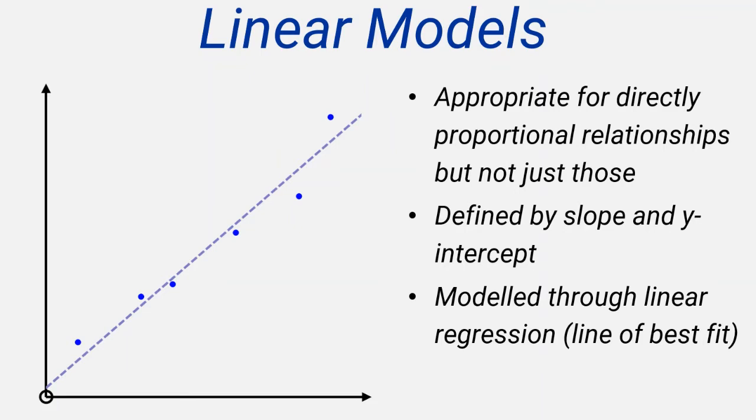Linear models are particularly susceptible to problems with extrapolation, and so need to refer to the domain of the data. For example, the weight of newborn babies against their age in weeks would typically follow a linear pattern for the first few months of their life, but the same model would not be applicable into teenage or adult years.